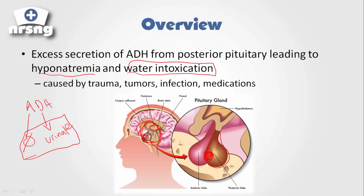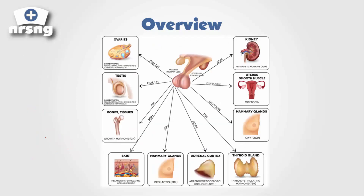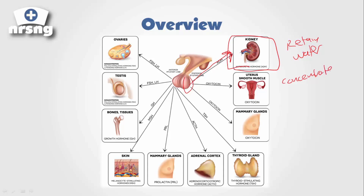The body is going to bring on all this water. We have these massive amounts of water in our system, which dilutes our system and leads to hyponatremia and can also lead to water intoxication. Our urine becomes incredibly concentrated and will become dark brown. Here, our posterior pituitary in the brain secretes antidiuretic hormone, which acts on the kidneys to retain water, leading to further concentrated urine.